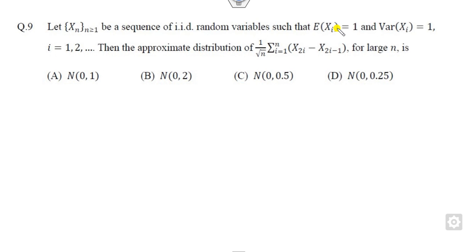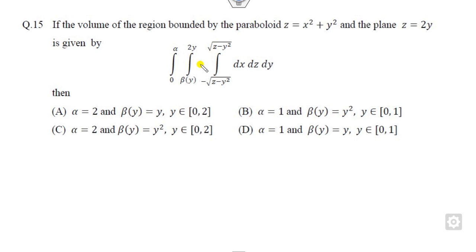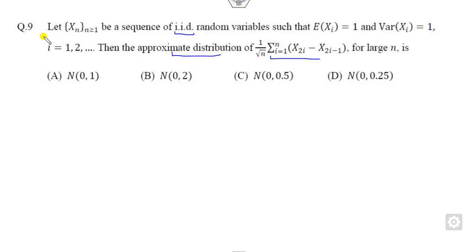Question number 9 is related to identical distribution and you have to find which distribution follows based on the given conditions. Question number 15 is related to some bounded area and you have to find the conditions on alpha as well as on beta depending upon the paraboloid and the plane. Question 15 is of two marks and question 9 is of one mark.